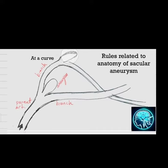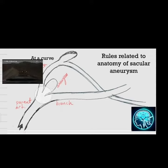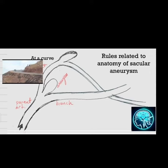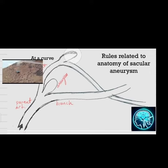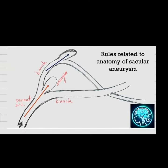At these points, blood hits the wall of the artery hard, like a car hitting a fence when it goes too fast around a turn. And the long axis of the aneurysm is consistent with the direction of the blood flow of the parent vessel.